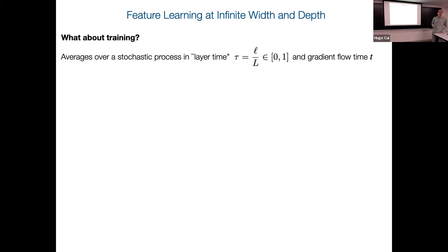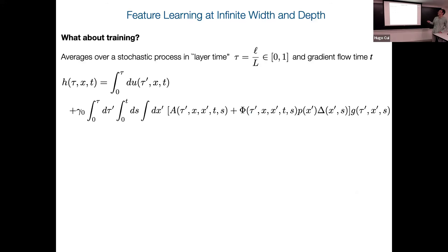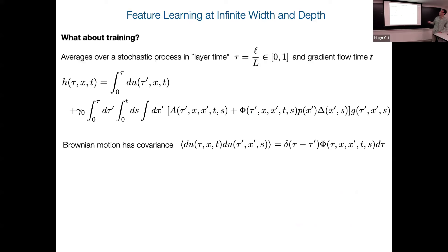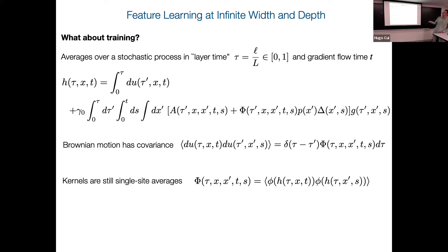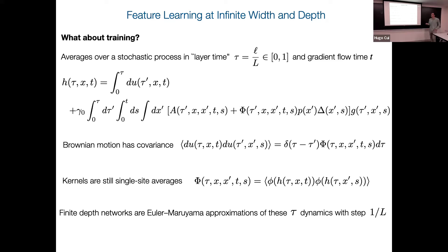During training, H basically looks like some Brownian motion — some integrated Brownian motion — plus a feature learning term of the same flavor as in the infinite-width case. This now carries a tau index (layer time), a t index (training time), and an x index (data). All values at layer time tau depend on integrals up to tau. This Brownian motion is local in layer time but has a covariance given by the feature kernel, and kernels are still single-site averages. The finite-depth network is just an Euler discretization of this process with step size 1/L.